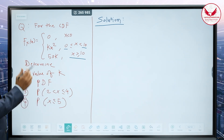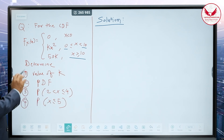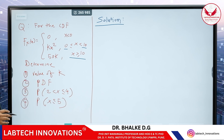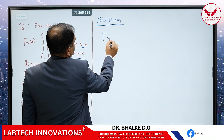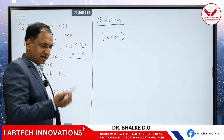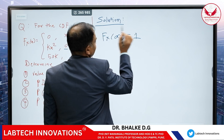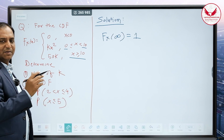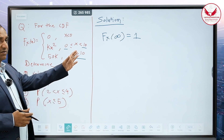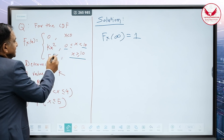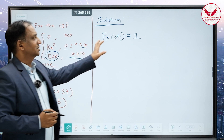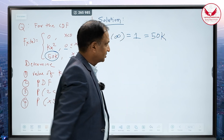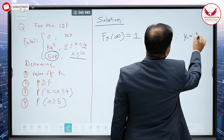Find the probability between 2 to 4, and find the probability for the random variable less than or equal to 5. To find the value of the constant k, we use the property that F(∞) equals 1. When the random variable x is greater than or equal to 10, up to infinity, its value is 50k. Therefore F(∞) = 1 = 50k, so 50k equals 1, and therefore k equals 1/50.